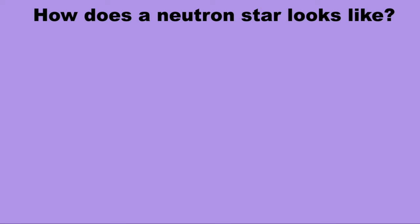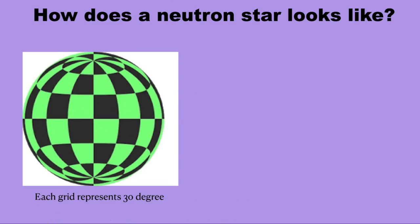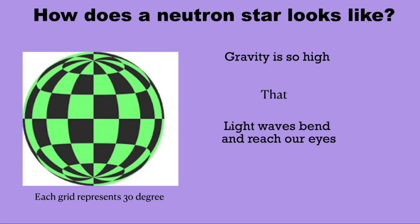Now, if you ever happen to see a neutron star, it would not look like the way you think, but it would look a lot more crazy. You would be able to see more than half of the neutron star from any direction you see. This is because the light waves get curved due to the star's high gravitational force. The light waves reflected or emitted from behind the 180 degrees of the star will get curved and reach our eyes.